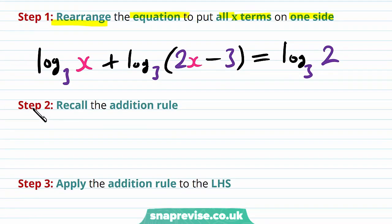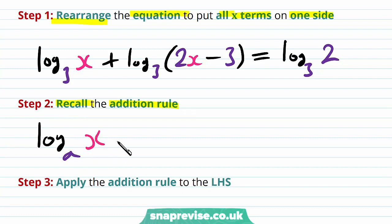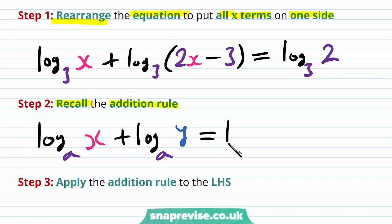Our second step is to recall the addition rule. Namely, the log base a of x plus the log base a of y is equal to the logarithm of the product xy. So we get log base a of xy.